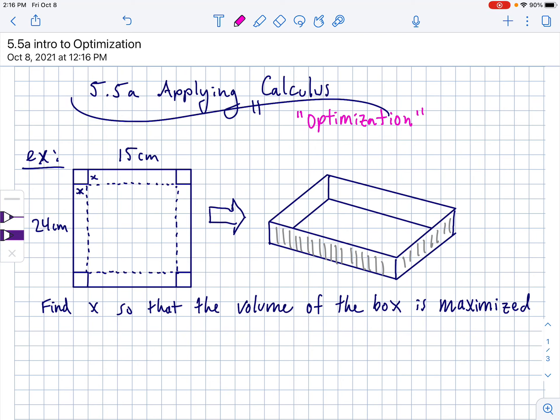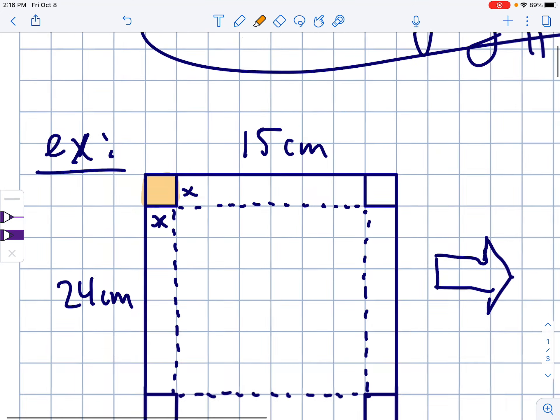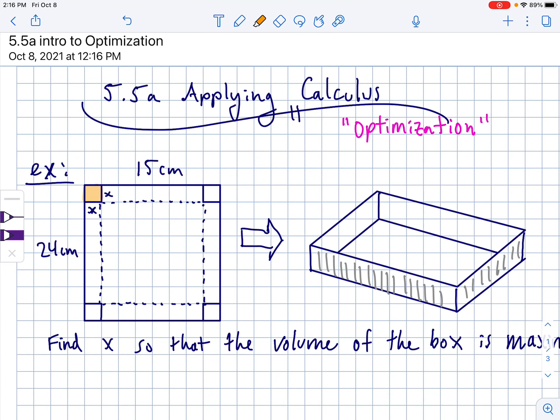So you might hear us say we're going to do some optimization problems in the next class or something like that. Optimization is what it's also called. We're going to start with the classic folding box problem. So if you've never seen this before, it starts with a rectangular sheet of paper or sometimes it's metal depending on how they reword the problem.